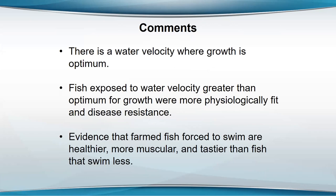There's a water velocity where growth is optimal. When fish are exposed to water velocity greater than optimal for growth, they're often more physiologically fit and disease resistant. Making them swim against the current may have some benefit for disease resistance.